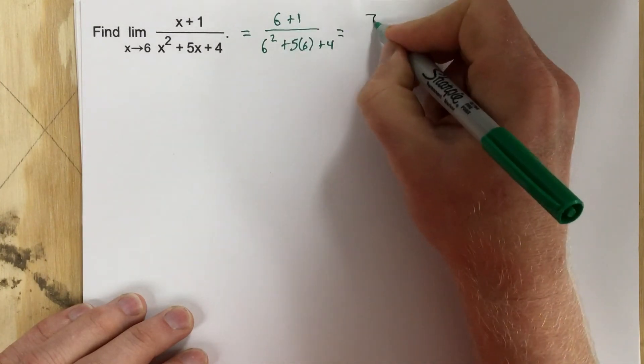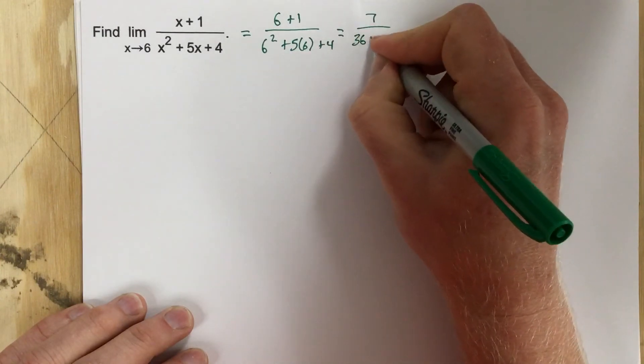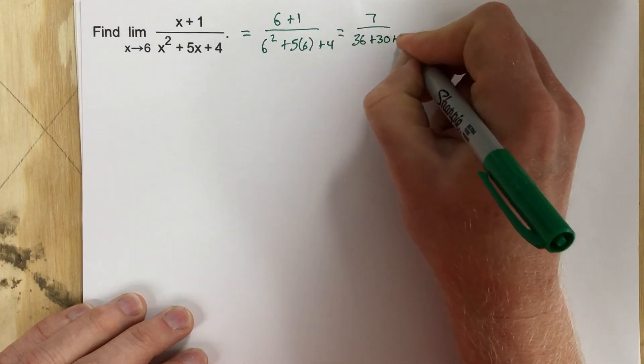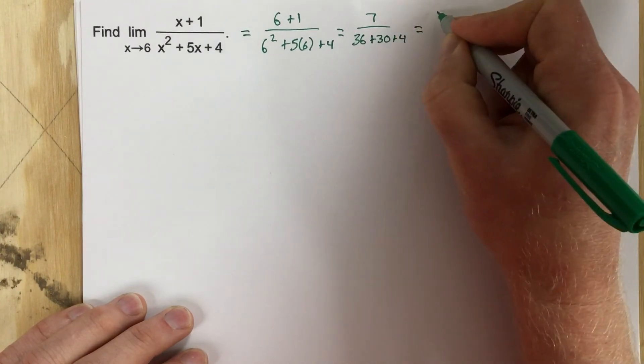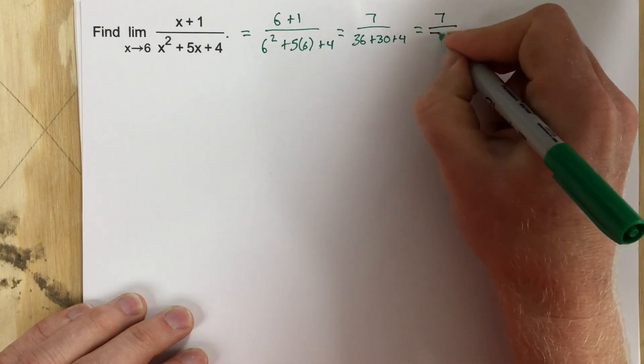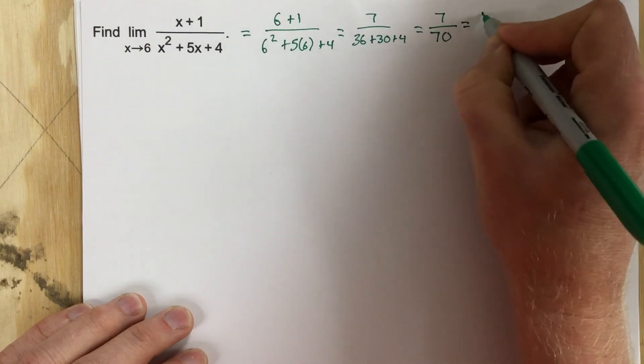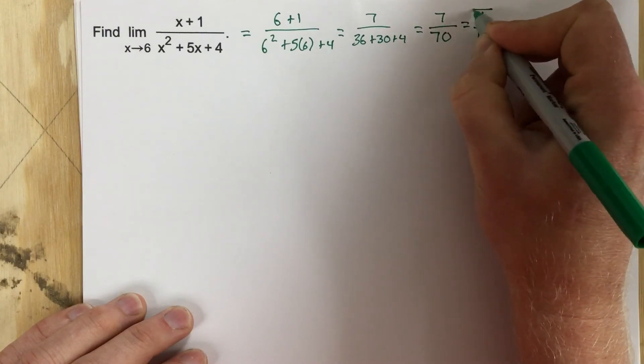6 plus 1 is 7 over 6 squared is 36 plus 30 plus 4. So I end up with 7 over, this will be 66 plus 4, so 7 over 70, and that's 1 over 10. So it's defined.